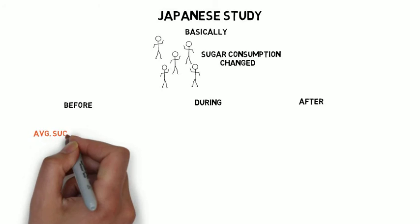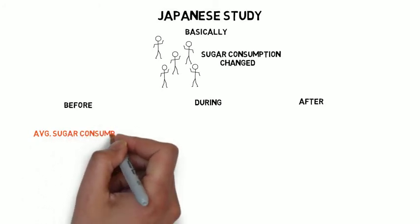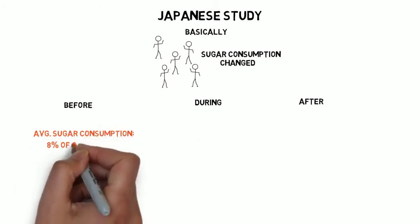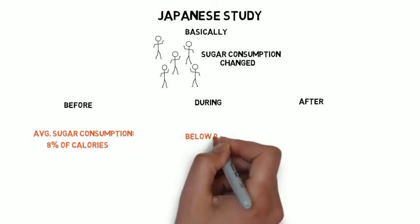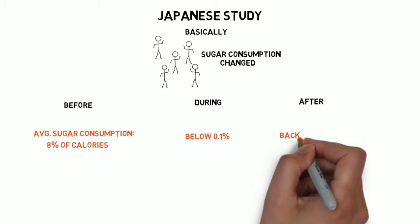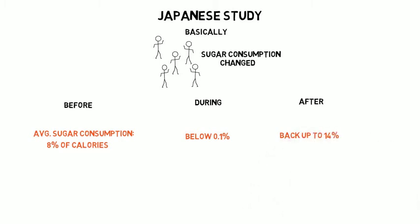Before World War II, the average Japanese sugar consumption per person per year was equal to 8% of the total calories consumed. Then, during the war, this number dropped just below 0.1%, and then went back up to 14% after the war was over.